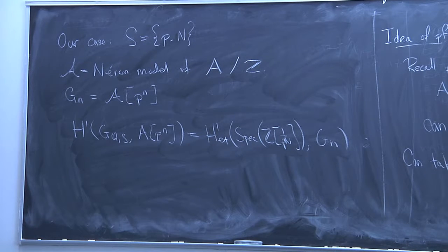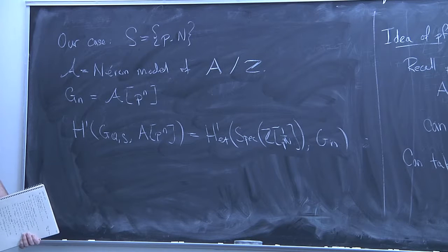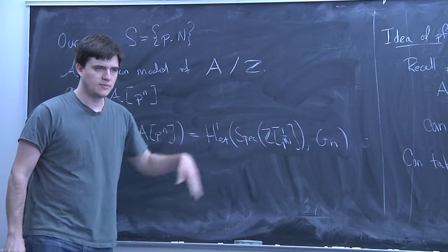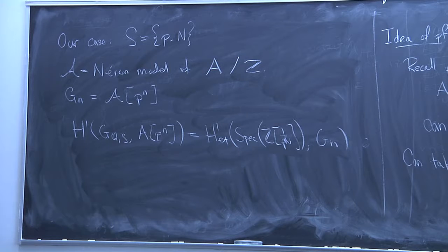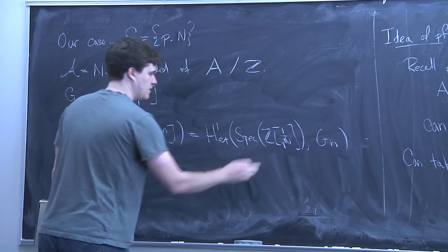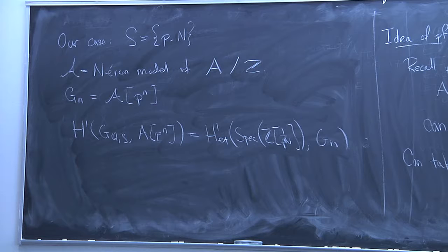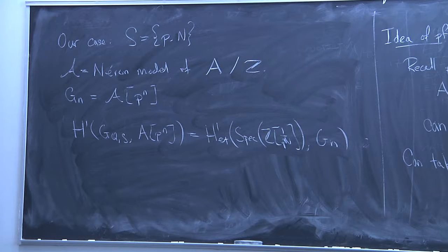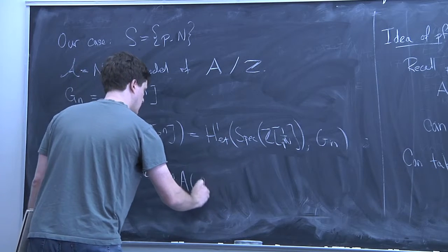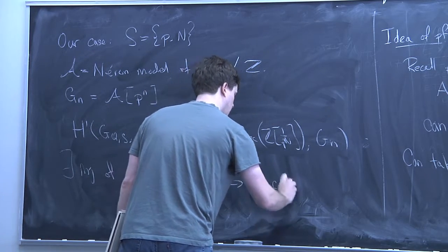Over a field, the étale site is just the category of extensions of that field, and the Galois cohomology corresponds to the étale cohomology of the field. When you impose ramification, you're dealing with the étale cohomology over the ring of integers with whatever prime is inverted where you want to allow ramification. The way to do better: since there is ramification at P and N, we can't take étale cohomology over all of Spec Z, but we can use fppf cohomology. So there is an injection of A(Q)/P^n A(Q) into H^1_{fppf}(Spec Z, G_n).